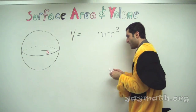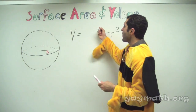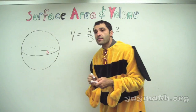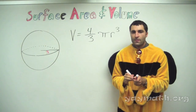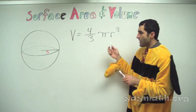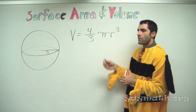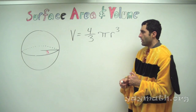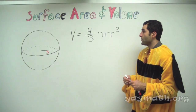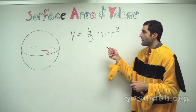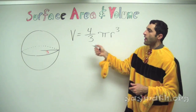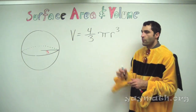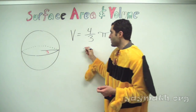So we have pi r cubed, and we need a coefficient. This one is harder to explain without using calculus. It's best that we leave the formula as it is and just use it to get the volume of this sphere.